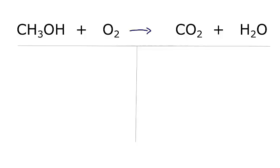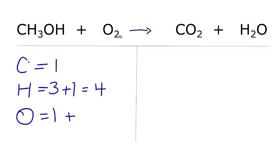Let's add up the atoms on each side of the equation. Carbons, we have one. Hydrogens, we have three plus one for a total of four hydrogens. Oxygens, we have one oxygen plus these two oxygens right here, so we have three of those.